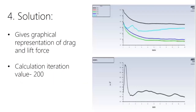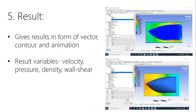The fourth step is the solution, which provides graphical representations of aerodynamic variables such as drag force, lift force, drag coefficient, lift coefficient, and other variables from the Navier-Stokes equations used in the analysis, including k and omega. The final step yields results — for our project we selected four output types: air velocity, air pressure, wall shear, and air density.